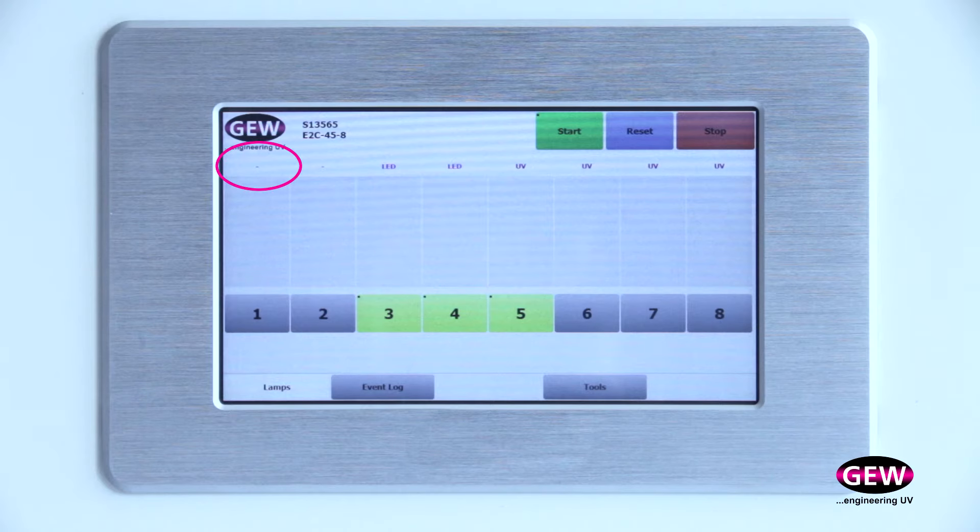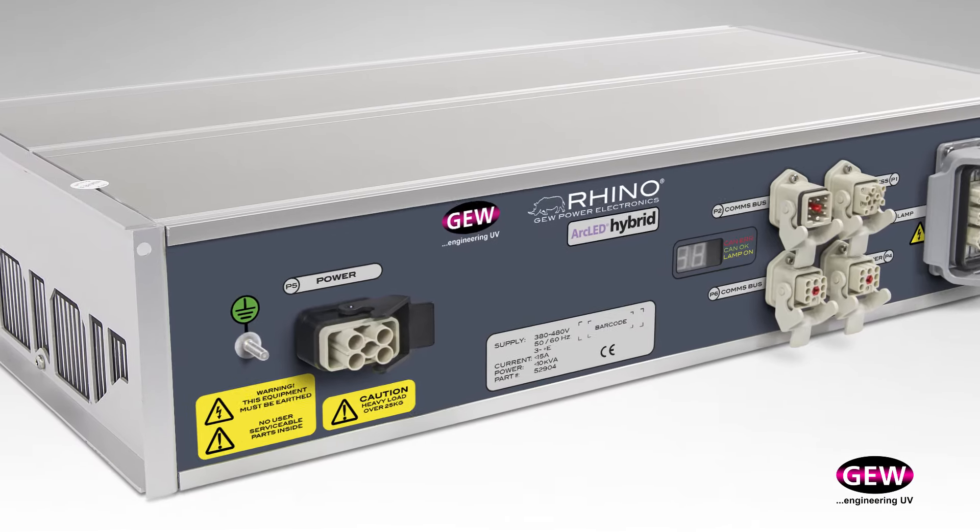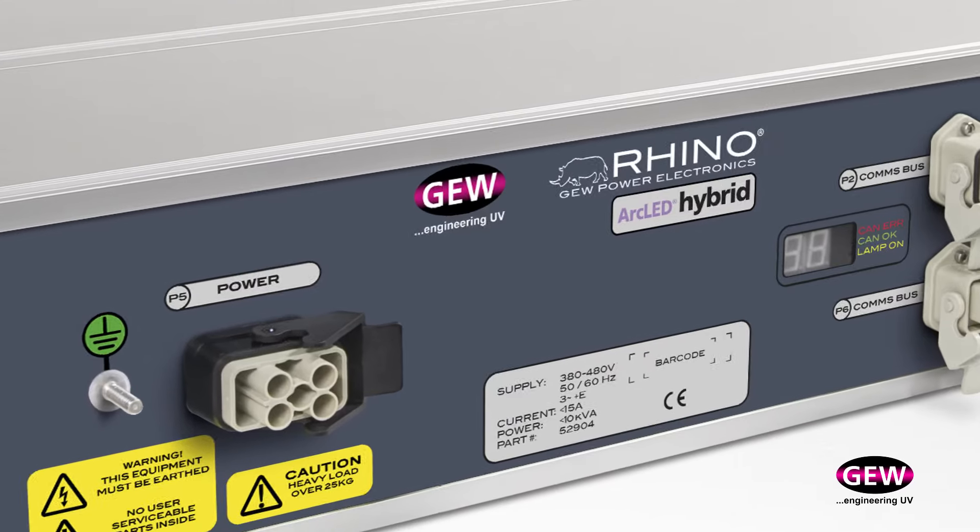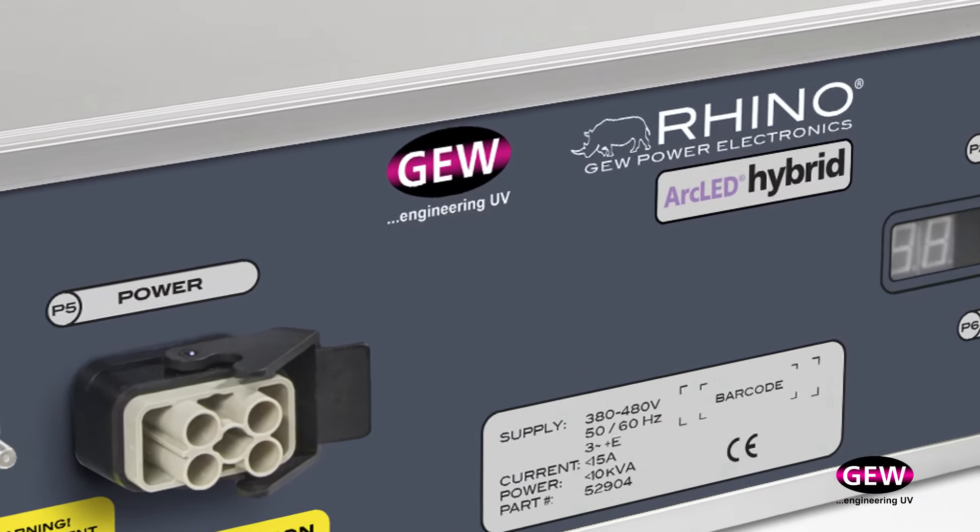The Rhino Control identifies the cassette as a UV LED type and supplies the correct low voltage direct current from the same Rhino Arc LED power supply that ran the conventional lamp just moments ago.